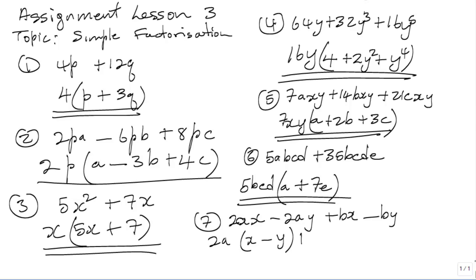2A into 2AX is X, minus 2A into 2AY is Y. Plus, what is common to the next two terms BX minus BY? B is common, so you take out B. B into BX is X and B into BY is Y. Now if you look carefully, you're going to make two pairs of brackets. What is outside the bracket is 2A plus B — that's one factor. And what is common in the other pair of brackets is X minus Y. So the solution is 2A plus B times X minus Y.